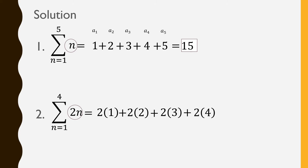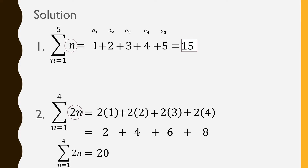We then simplify by multiplying first. So 2 times 1 is 2, plus 2 times 2 is 4, plus 2 times 3 is 6, and 2 times 4 is 8. Then get the sum: 2 plus 4 plus 6 plus 8 is equal to 20. Hence, the value of our summation, the sum of 2n as n goes from 1 up to 4, is just 20. Note that for this arithmetic sequence, 2, 4, 6, and 8 are our first 4 terms.